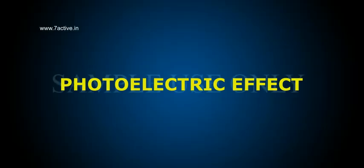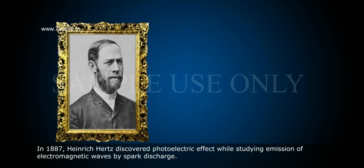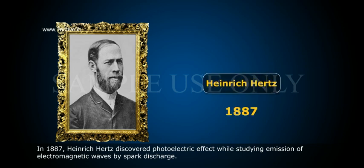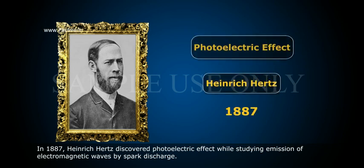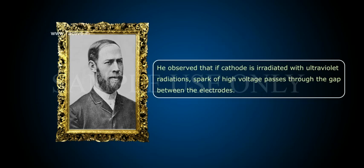Photoelectric effect. In 1887, Henrik Hertz discovered the photoelectric effect while studying emission of electromagnetic waves by spark discharge. He observed that if the cathode is irradiated with ultraviolet radiations, a spark of high voltage passes through the gap between the electrodes.